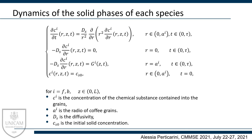The first equation of the problem is the diffusion equation in spherical coordinates in the case of spherical symmetry. It describes the transport of chemicals within the coffee grains, while the second and third equations are the boundary conditions and the last one is the initial condition. In particular, the third equation describes the mass transfer occurring between the chemical extracted from the grains and the liquid flow moving among the grains.